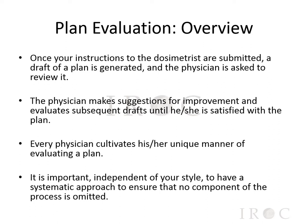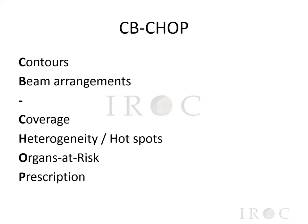Once your instructions to the dosimetrist are submitted, a draft of the plan will be generated and the physician is asked to review it. At that point, the physician makes suggestions for improvement and evaluates subsequent drafts until they're satisfied with the plan. Every physician will cultivate their unique manner of evaluating a plan, but it's important to have a systematic approach to ensure that no component of the process is omitted. We're providing one such method here that's simple to remember — a mnemonic called CBCHOP — where each letter corresponds to a different aspect of plan review.